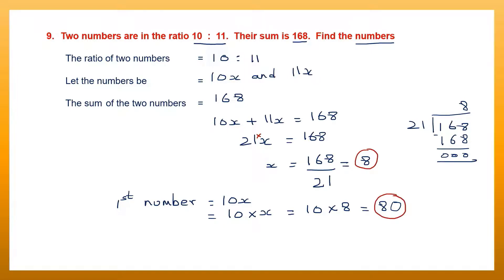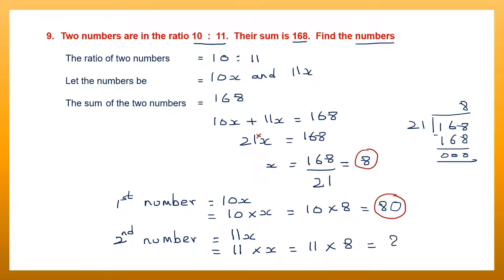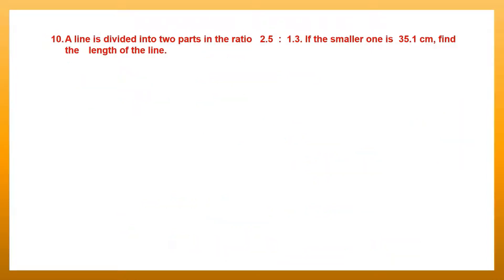The second number is 11x, that means 11 into x. That is 11 into 8, because x is 8. 11 eights are 88. So our first number is 80 and our second number is 88.